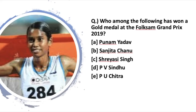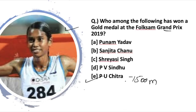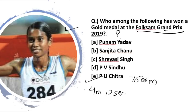Moving on to the next question: who among the following has won a gold medal at the Foxham Grand Prix 2019? Can you guess the name from the picture? The athlete is P.U. Chitra, who won a gold medal in the 1500 meters race at Foxham Grand Prix 2019. She recorded the highest time this season, completing the race in 4 minutes 12 seconds. Now, the question for you: where is this Foxham Grand Prix being held? Mention your answer in the comment section below.